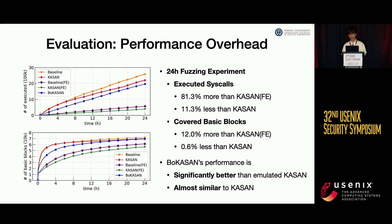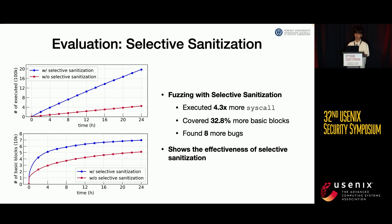Let's see how much overhead is incurred by BokaSAN and whether it is acceptable for kernel fuzzing. We compared BokaSAN with KASAN in 24-hour fuzzing sessions. We also compared against KASAN running on an emulator to see how much overhead full emulation incurs. BokaSAN executed 81% more syscalls and found 12% more basic blocks than the emulator-based KASAN, showing BokaSAN's efficiency. In a 24-hour fuzzing task, selective sanitization let us execute 4.3 times more system calls and found 32.8% more basic blocks, demonstrating the effectiveness of selective sanitization.